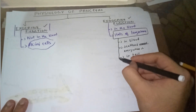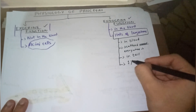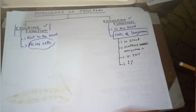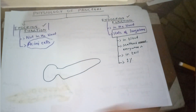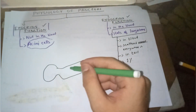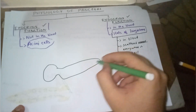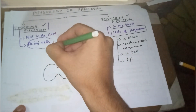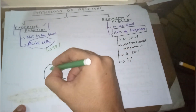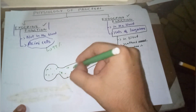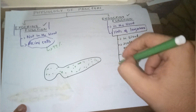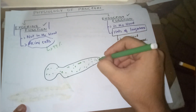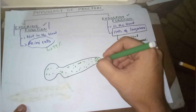The islets of Langerhans compromise just one percent of the pancreas. For example, in a rough diagram of the pancreas, 99% is comprised by acinar cells, and the little dots everywhere represent the islets of Langerhans — and they are more abundant in the tail.